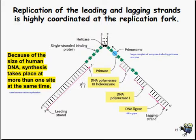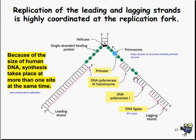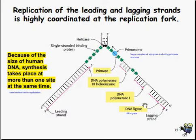DNA polymerase 3 acts on both the leading and lagging strands in accordance with the proper 5' and 3' direction. However, that does leave gaps in the DNA on the lagging strand, which is where DNA polymerase 1 goes in and does its thing, followed by DNA ligase, which comes along and fills in the gaps of the strand.